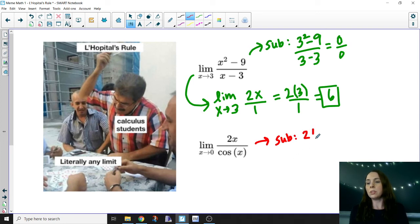We get 2 times 0 in the numerator, so that's 0. But we get cos(0) in the denominator, and that's 1. This is not an indeterminate form. 0 divided by 1 is defined, right? It's equal to 0.